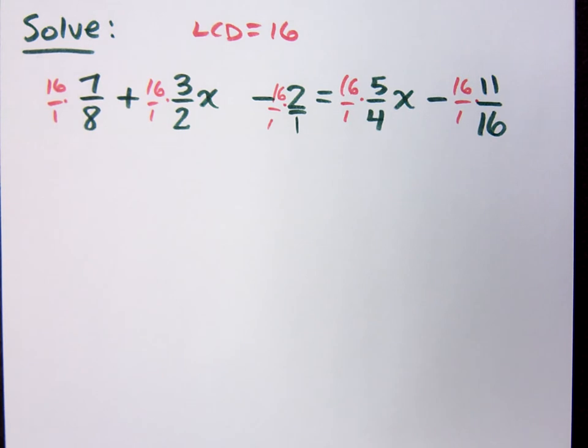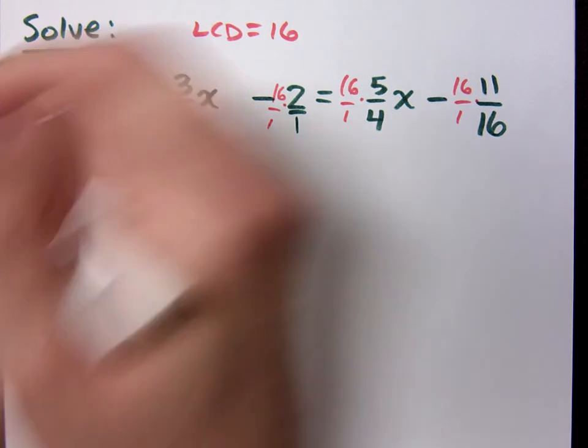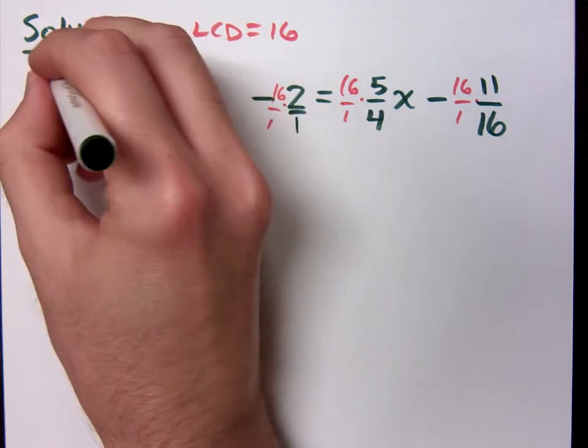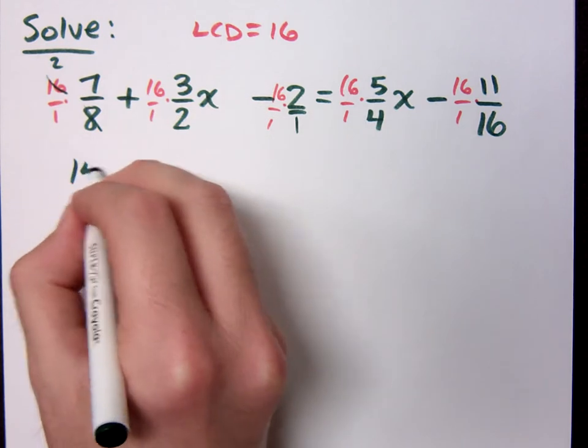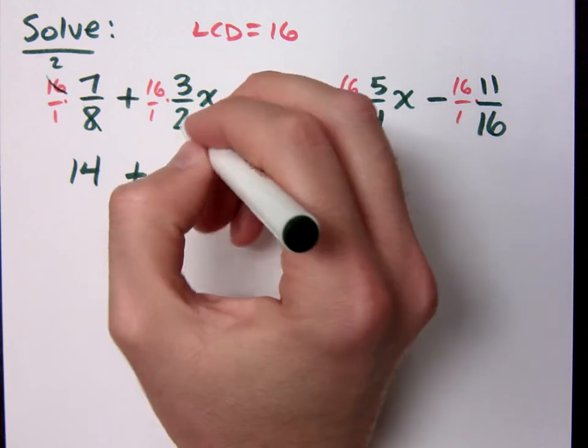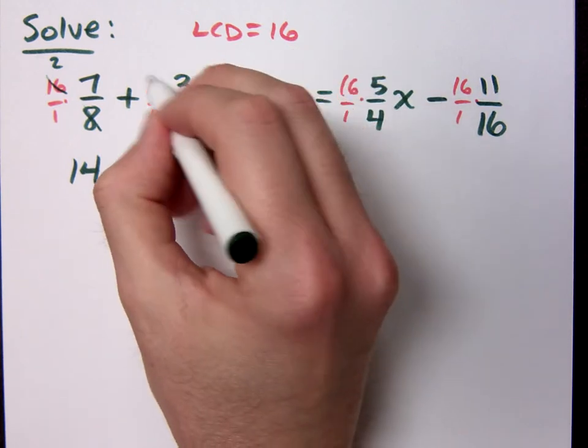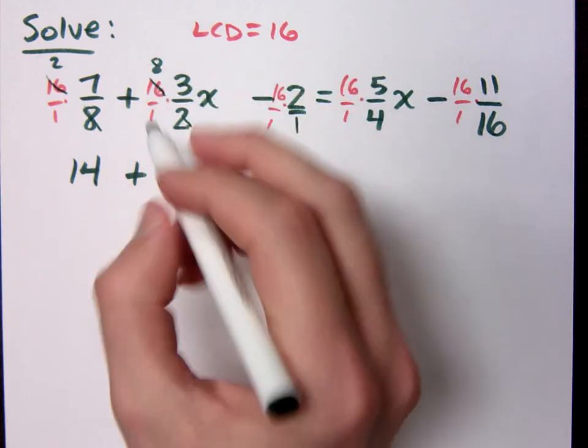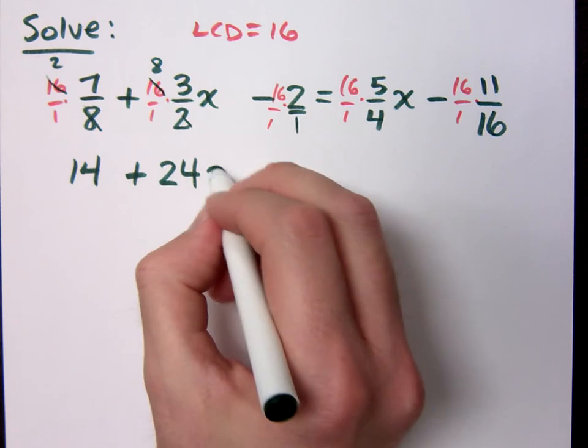So what happens in that first term? Fourteen. Eight goes in here twice, and I get 14. Plus what? Two goes in here eight times, so I get 24x. Then what?